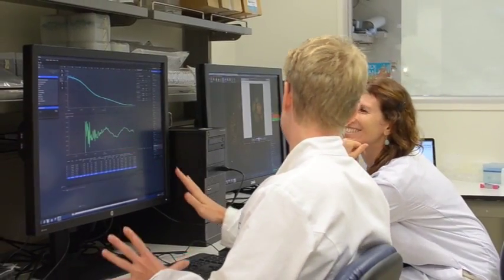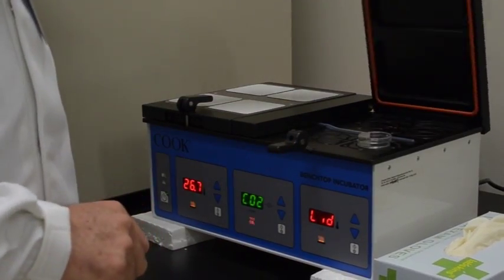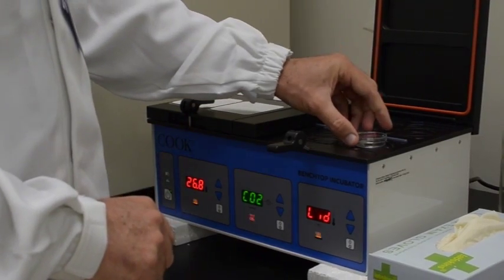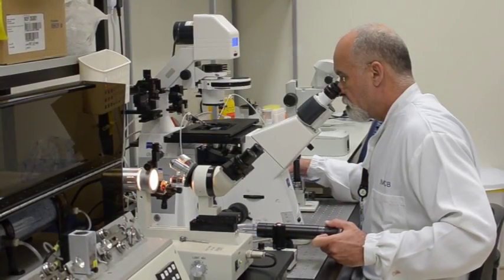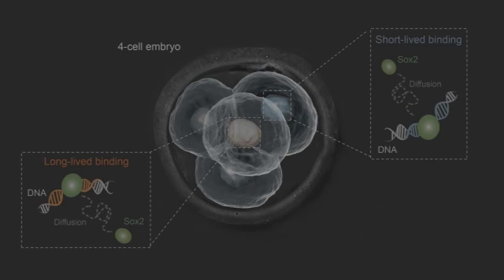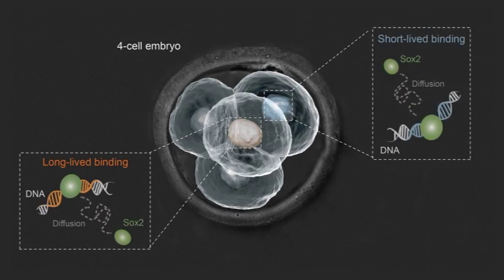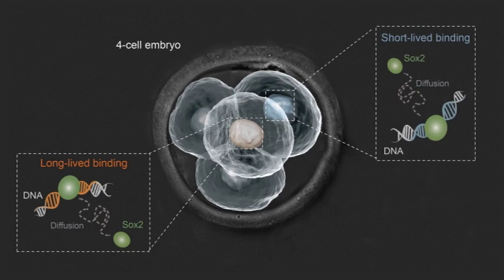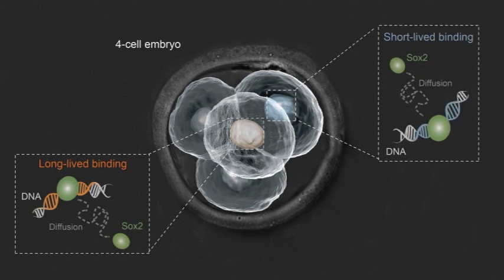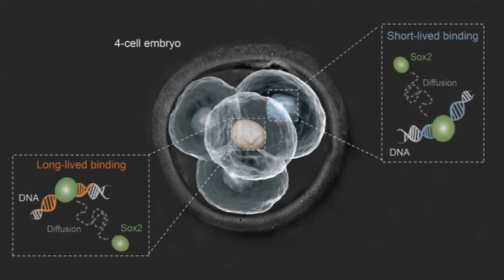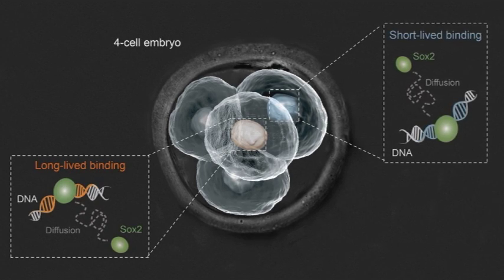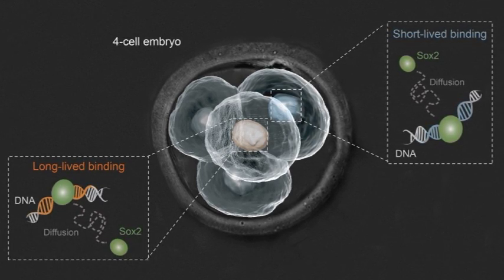We were able to apply those technologies — so far used mostly in cell culture or cell-free assays — to a living mammalian embryo. What we discovered is that even before you can see obvious cell fate differences, even before cells have adopted different positions, as early as the four-cell stage, there are already differences in the way some transcription factors bind to the DNA. Specifically, a transcription factor called SOX2 binds much more stably to the DNA in some cells of the embryo than others.